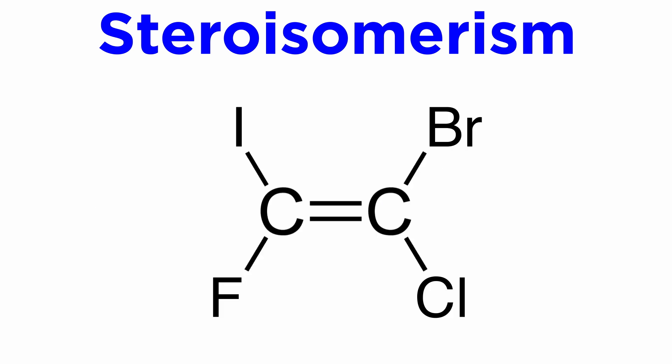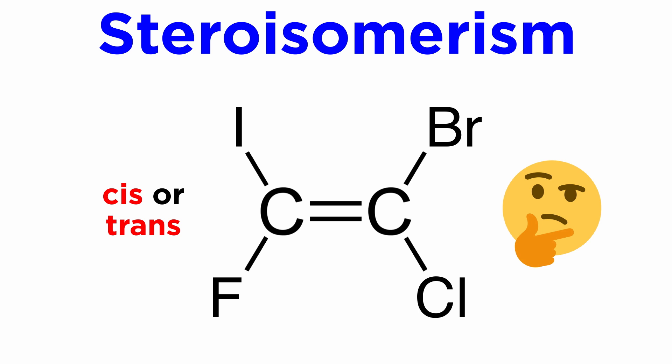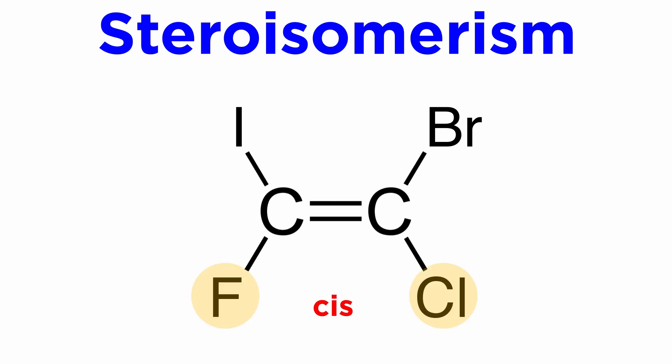But let's say we have four different groups on these two carbons, like these four different halogens. Now, is this alkene cis or trans? That terminology no longer works, because it is relative terminology. A group can be cis to another group or trans to another group, but we need a singular way to describe this molecule so as to give it a definite name.